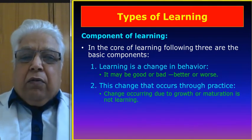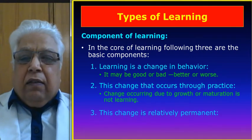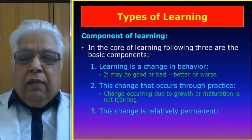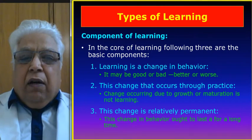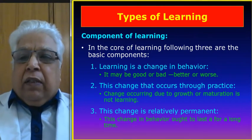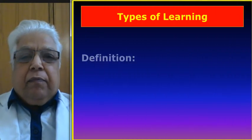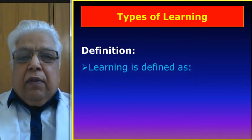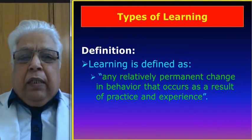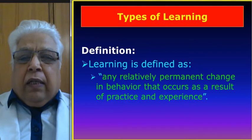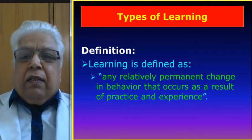Change occurring due to growth or maturation is not learning. And number three: this change is relatively permanent. This change in behaviour ought to last for a very long time. So, to define learning: any relatively permanent change in behaviour that occurs as a result of practice and experience is learning.